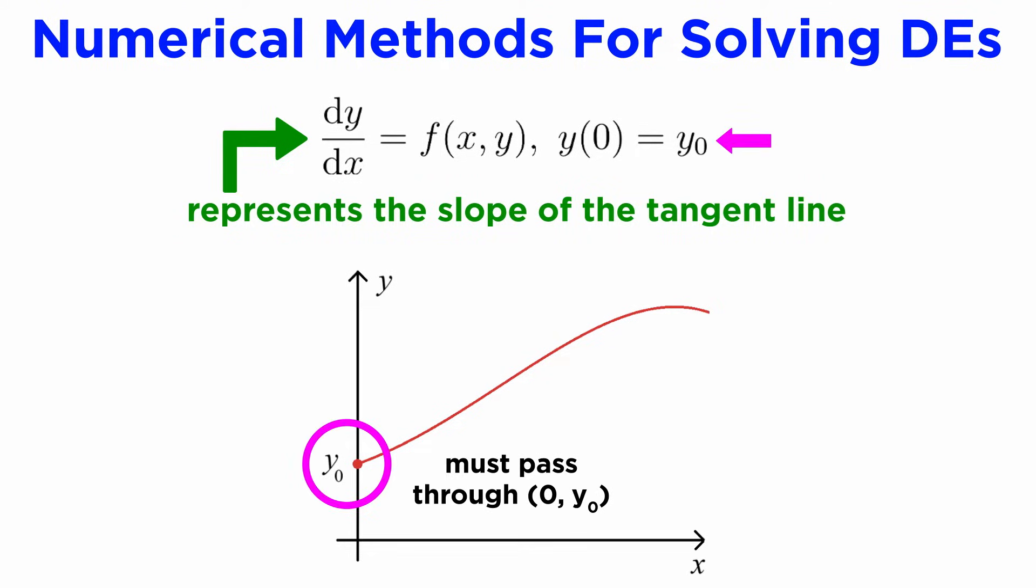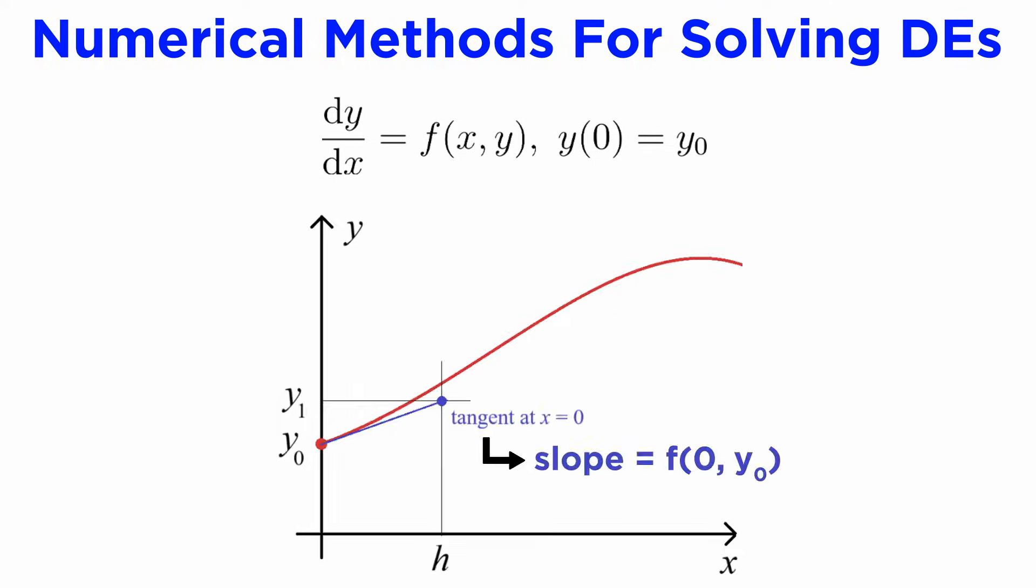Since we are starting with a given initial condition, we know that our solution must pass through the point (0, y₀), and we can calculate that the gradient of the tangent line to the solution at this point must be f(0, y₀), since this is equal to dy/dx in our differential equation. If we make the assumption that our solution is a well-behaved continuous function, then this tangent line will be a decent approximation to the solution for small steps away from this point.